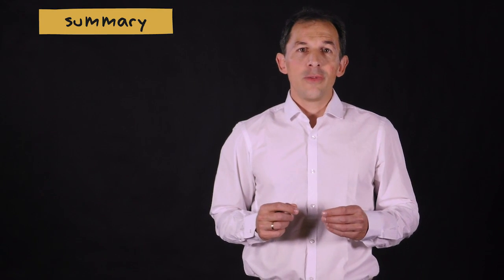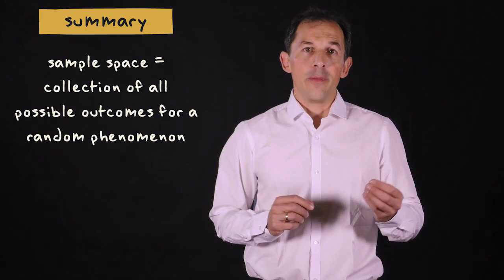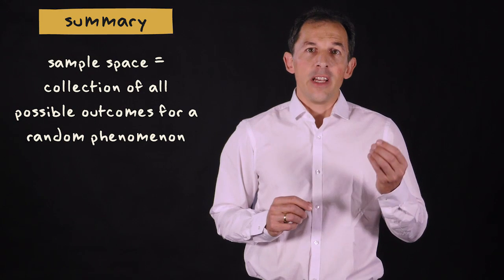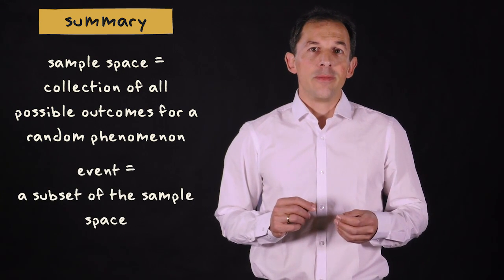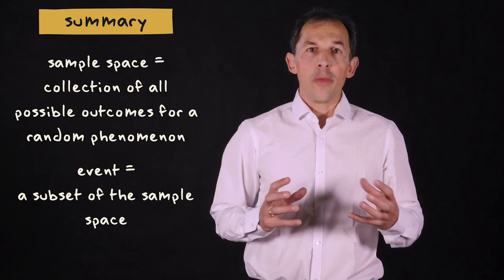Let me summarize what I explained in this video. A sample space is the collection of all possible outcomes of a random phenomenon. And an event is a subset of the sample space. It corresponds to a particular outcome of a random variable, or a group of possible outcomes.